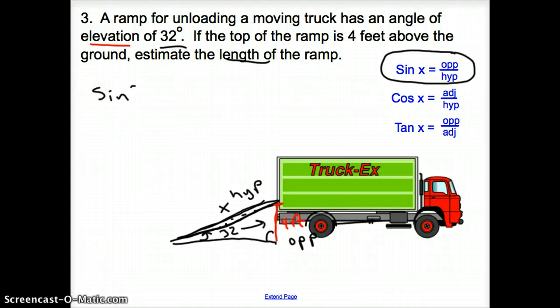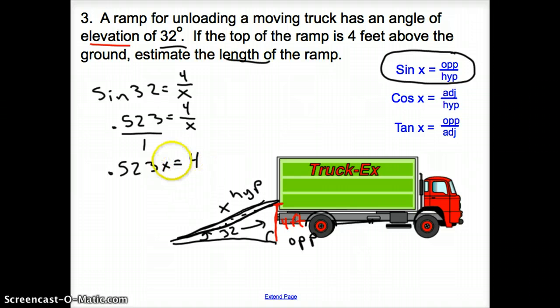So let's go ahead and use that. We have sine of 32 equals opposite, which is 4 over x. Now we do not need to use inverse sine here. We just hit sine 32 to find out our decimal answer. That is 0.523. That equals 4 over x. Put that over 1 and cross multiply. So it is 0.523 x equals 4 divided by 0.523. And so x equals 7.5 feet. So the length of our ramp is 7.5 feet.